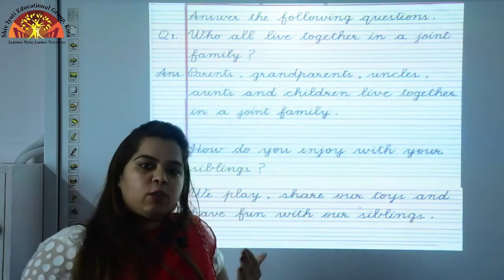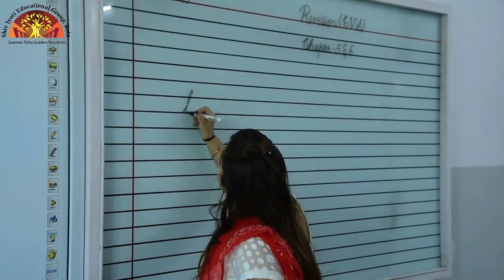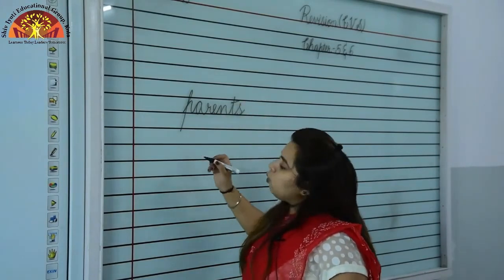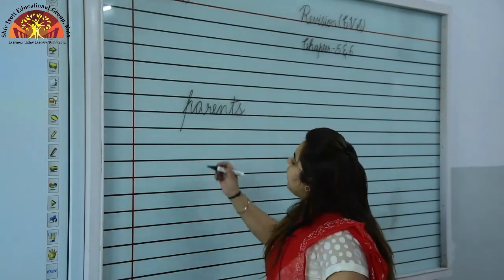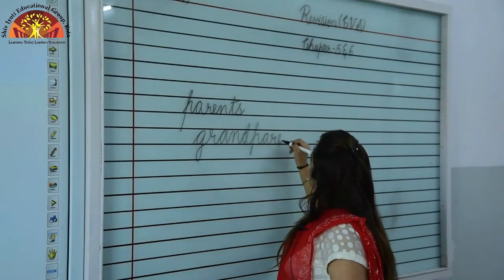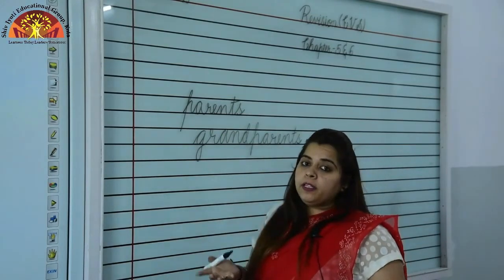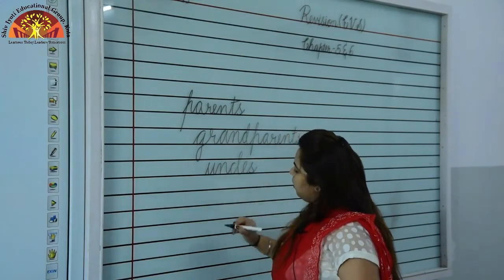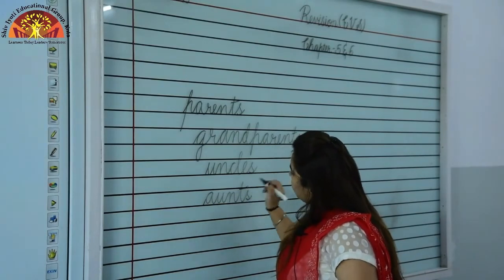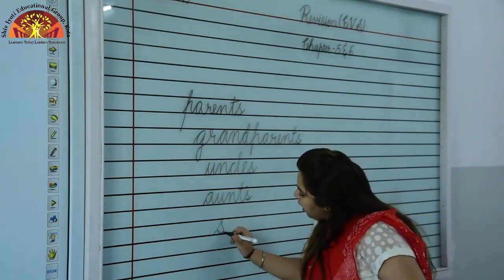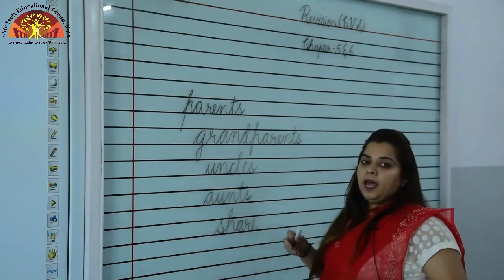Now we will learn some hard words of this chapter. First word: Parents — P-A-R-E-N-T-S. Father and mother are parents. Next: Grandparents — P-A-R-E-N-T-S with 'Grand'. Who are grandparents? Your parents' parents. Uncles — U-N-C-L-E-S. Aunts — A-U-N-T-S. And Share — S-H-A-R-E. We play, share our toys and have fun with our siblings.